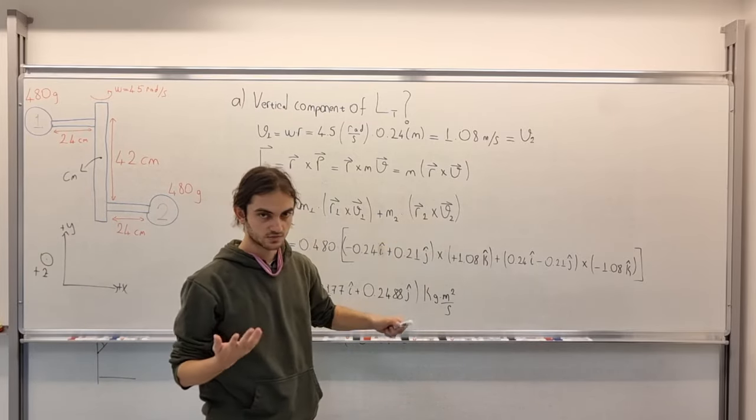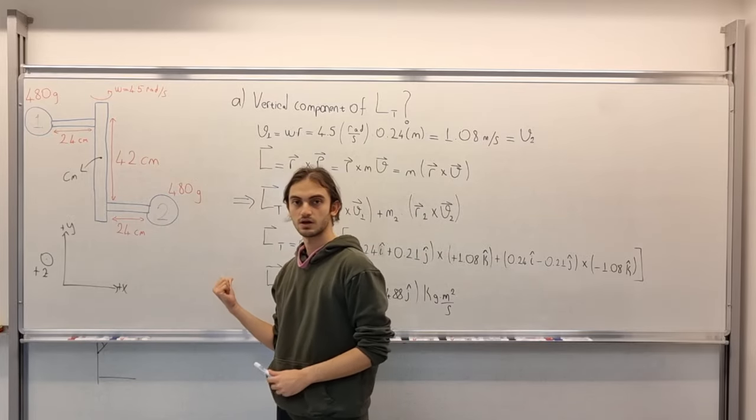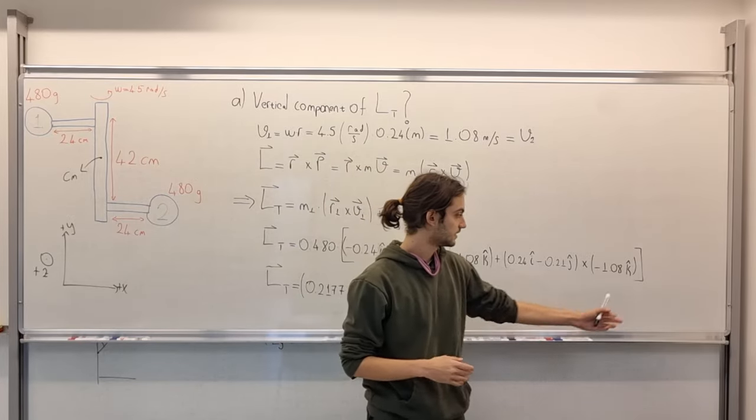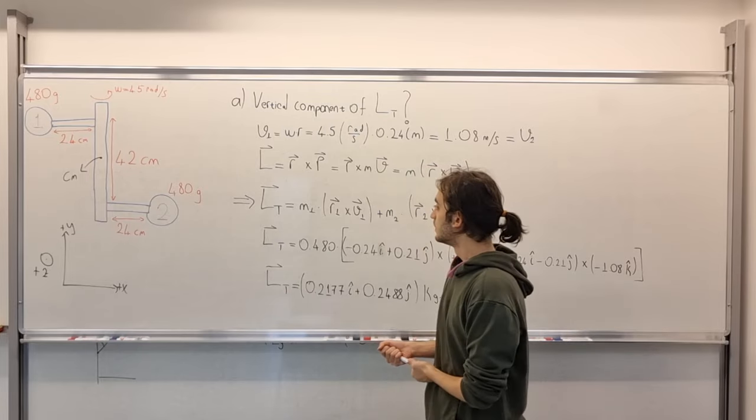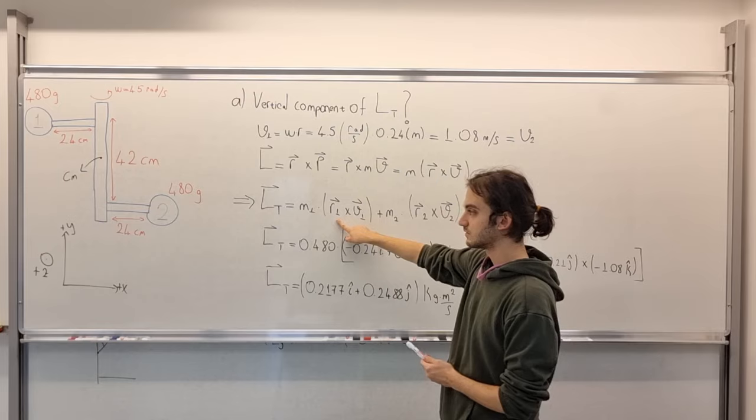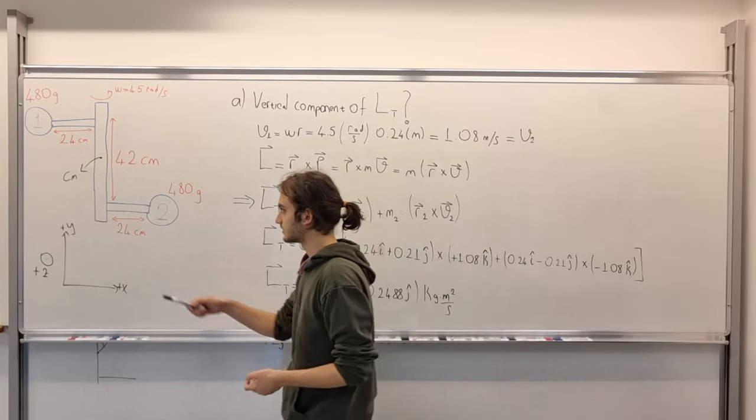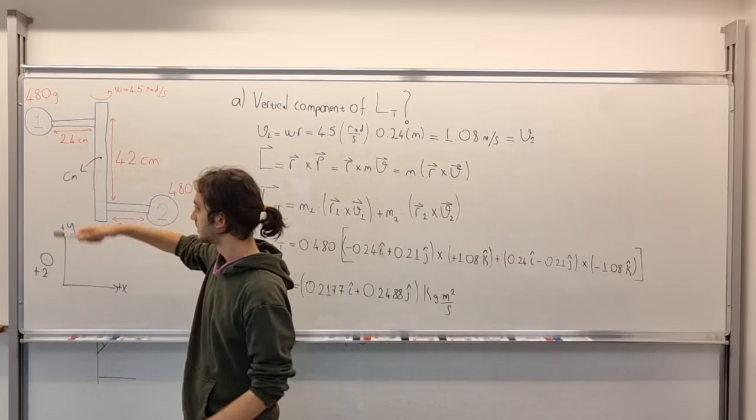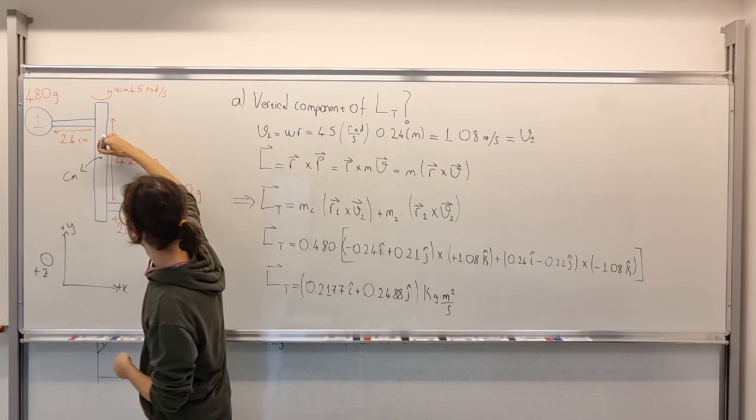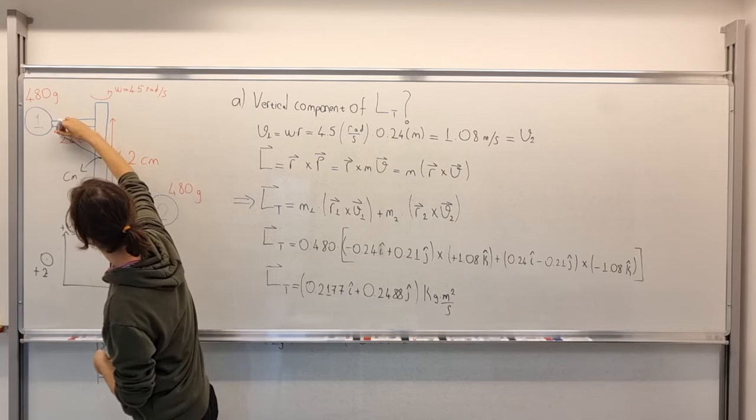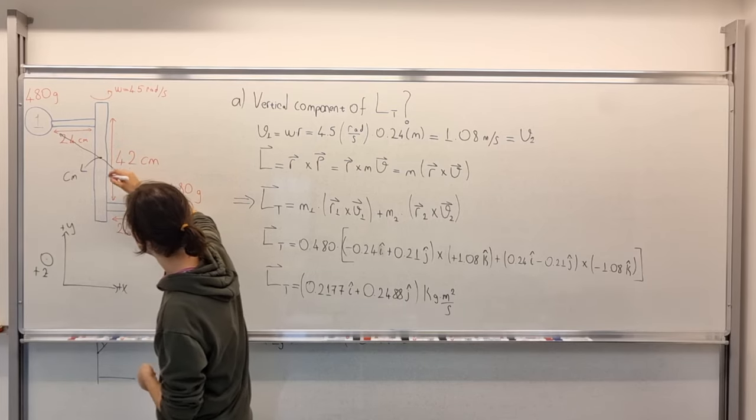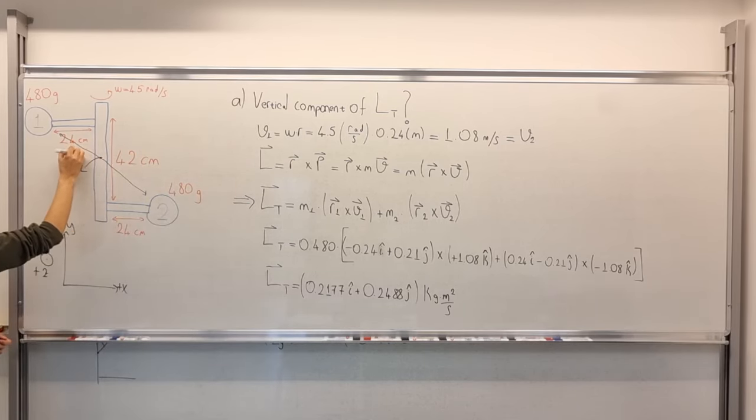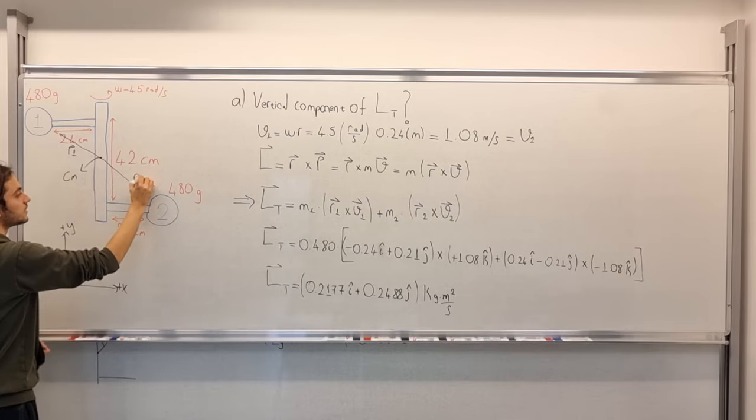And likewise, V2 is going inwards to the board, so it has to be minus 1.08k. About the position vectors, we know that since this is our center of mass, the position vectors are like this. And this is R1, let's just say R2.